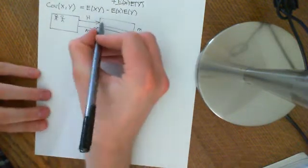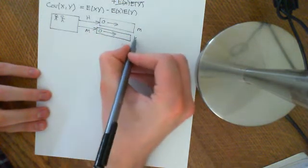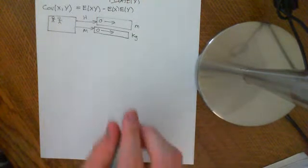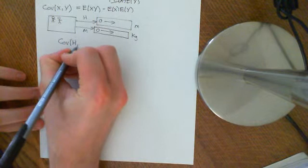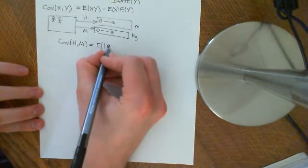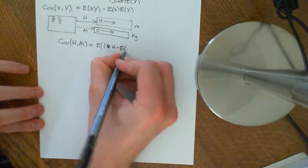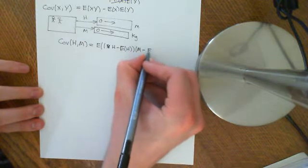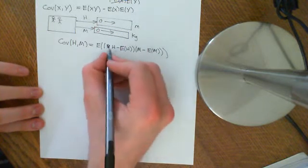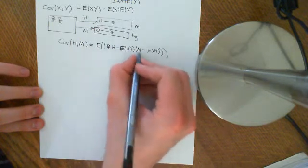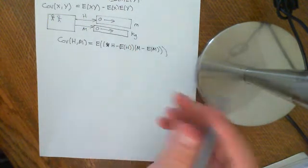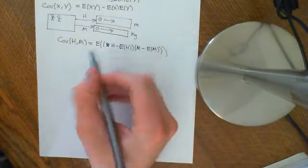Height we measure in metres, so zero upwards, and mass we measure in kilograms, also from zero upwards. We ascribe to every human a number H and M, and we'd like to know the covariance of H and M. We saw in the previous video that this is defined to be the expected value of H minus the expected value of H, times mass minus the expected value of mass. This gives us a number indicating how correlated the data is.